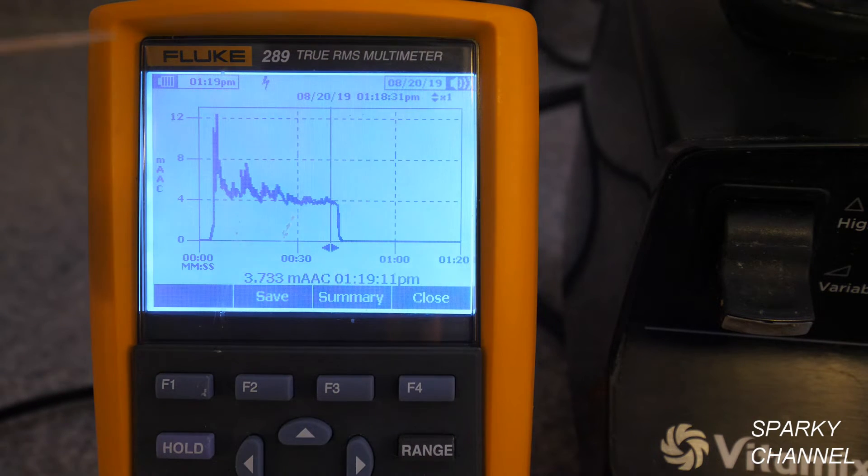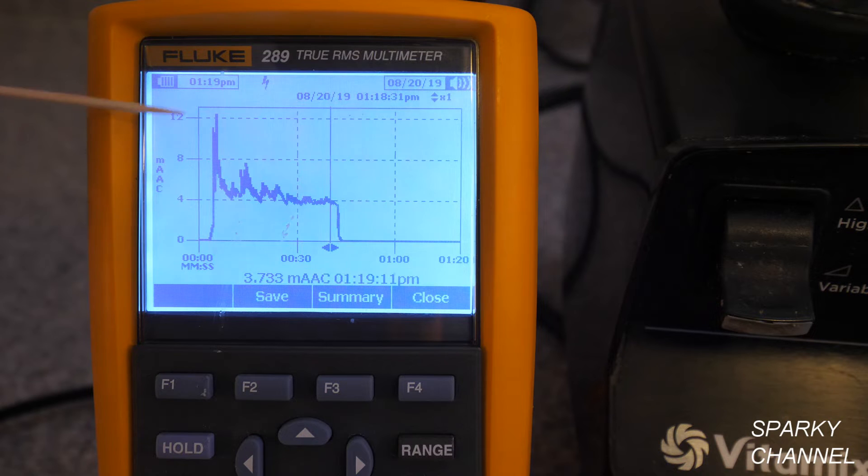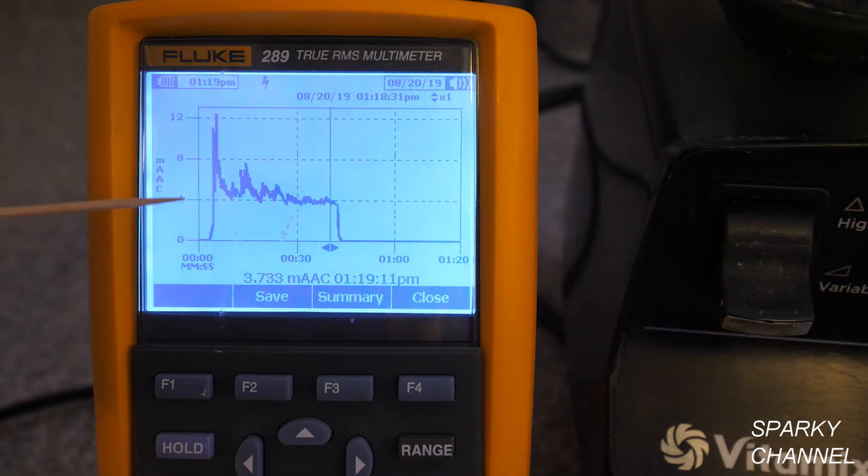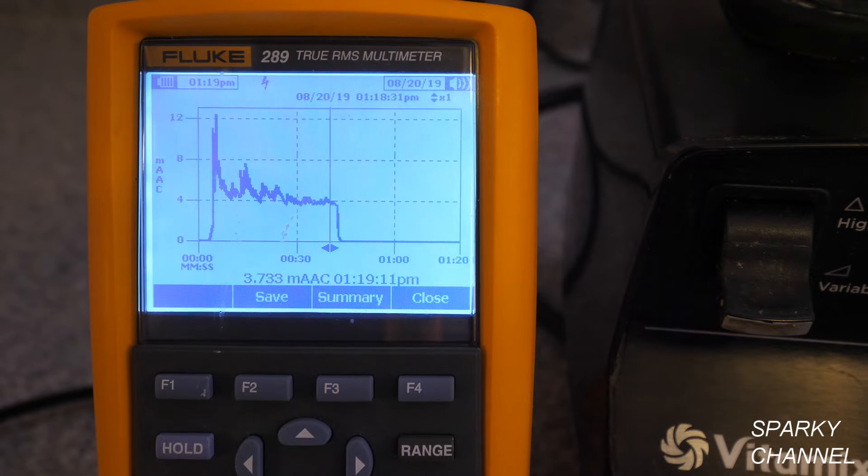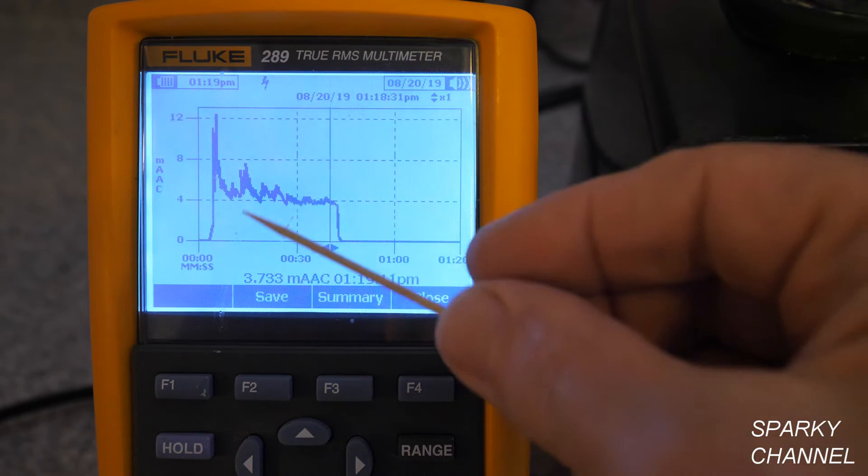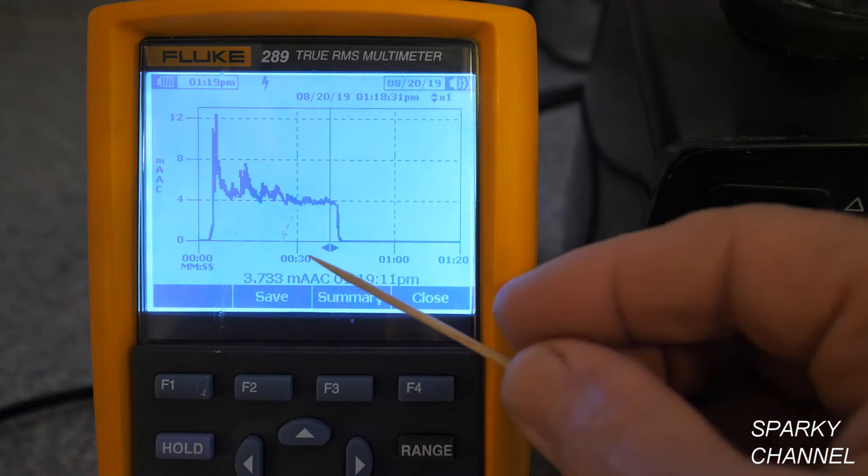You can see right here, we got up over 12 amps, maybe 12.2 or something like that at startup. So even though I started slowly, I started at speed 1 and came up to speed 10 and then hit high, it still had a startup amperage of over 12. I'm going to find that exact amperage in a minute.